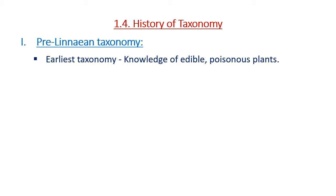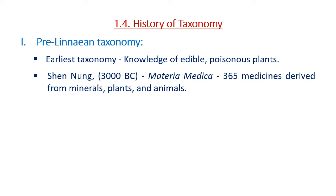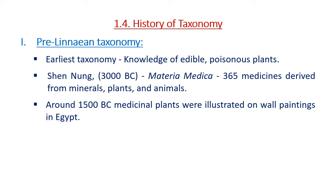The history of taxonomy: the earliest taxonomy was usually based on knowledge of edible and poisonous plants. Materia Medica, a book compiled by Shen Nang, an emperor from China, described 365 medicines derived from minerals, plants, and animals. Around 1500 BC, medicinal plants were illustrated on wall paintings in Egypt.